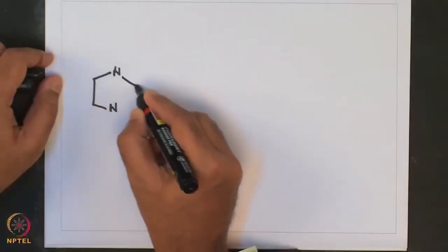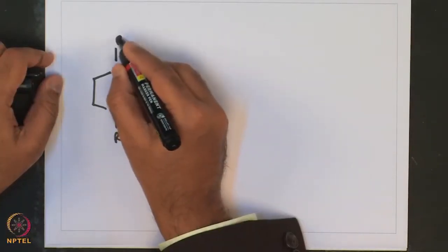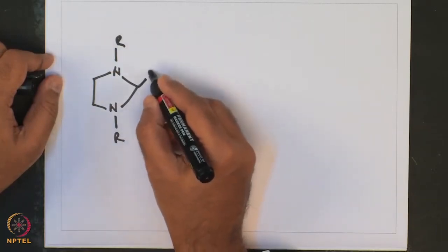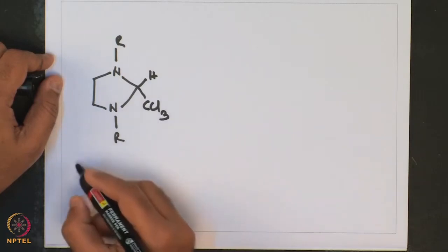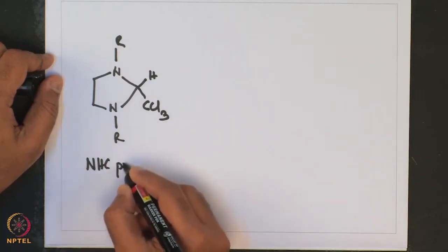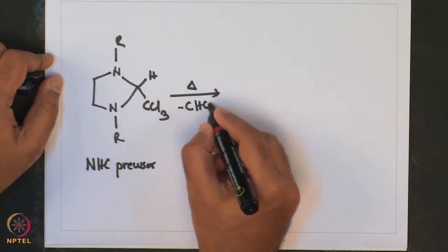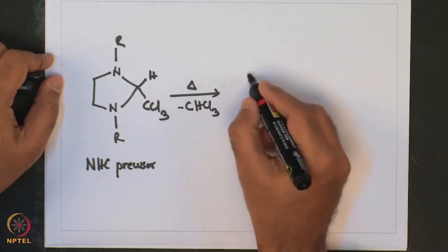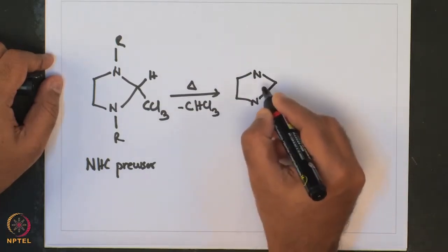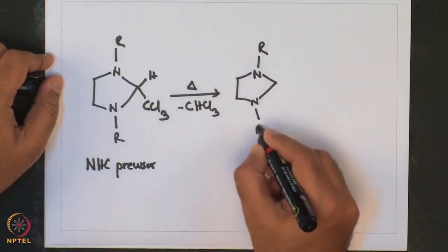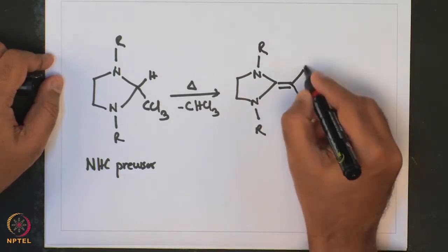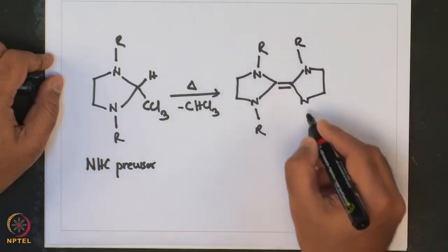One type of imidazolium precursor contains a CCl3H bond — it has a hydrogen and a CCl3 moiety. These are called NHC precursors, which upon heating give off chloroform (CCl3), leading to a free carbene carbon which then dimerizes to give an olefin of the type shown.